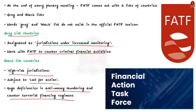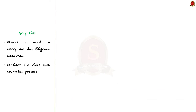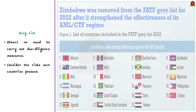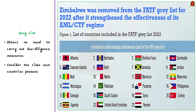As of 23rd February 2024, the following countries are under jurisdiction under increased monitoring: Bulgaria, Burkina Faso, Cameroon, Croatia, Democratic Republic of Congo, Haiti, Jamaica, Kenya, Mali, Mozambique, Namibia, Nigeria, Philippines, Senegal, South Africa, South Sudan, Syria, Tanzania, Turkey, Vietnam, and Yemen.